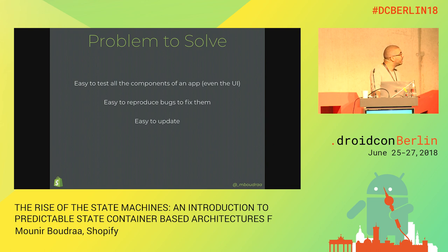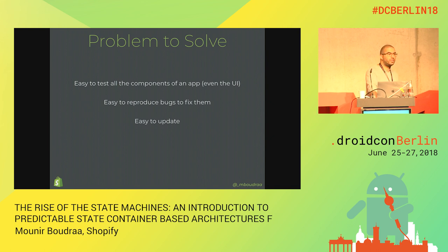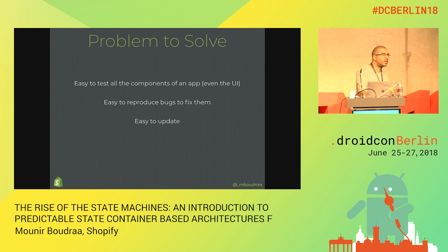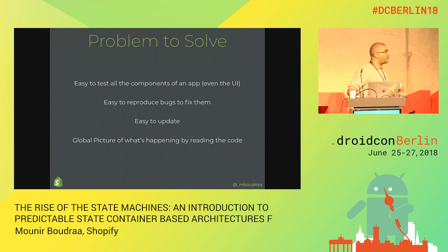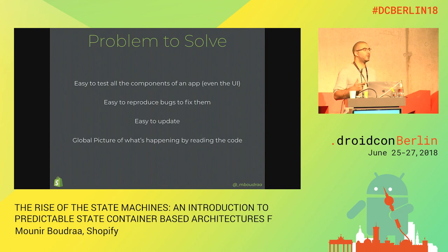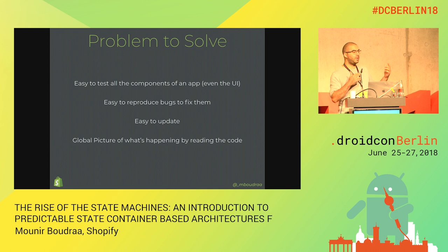I want something easy to update. As you can see, the diagram is pretty complicated. If the flow needs to be updated, I want something easy to update. When I arrived, everything was still very fuzzy and blurry - we didn't know what kind of flow we would have in the end. So I didn't want to update this diagram and neither the code linked to it.